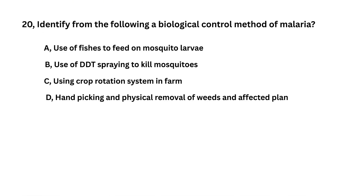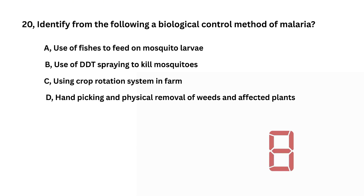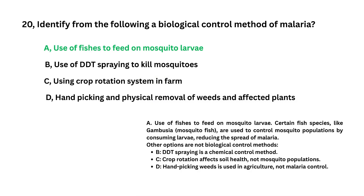Identify from the following a biological control method of malaria. Use of fishes to feed on mosquito larvae; use of DDT spraying to kill mosquitoes; using crop rotation in farming; hand picking and physical removal of weeds and affected plants. Use of fishes to feed on mosquito larvae is the answer.